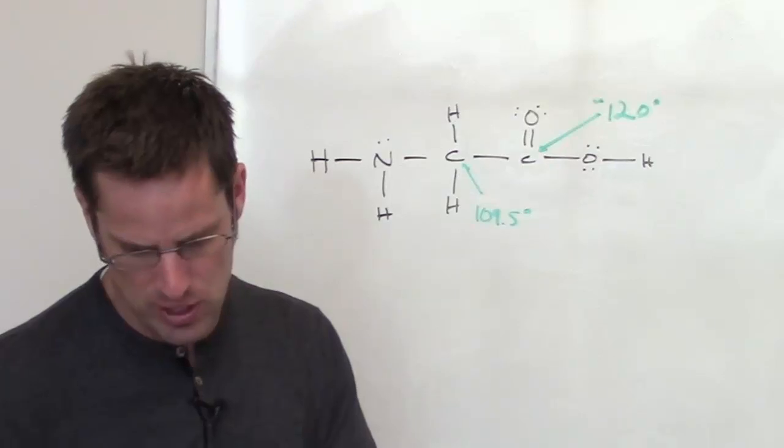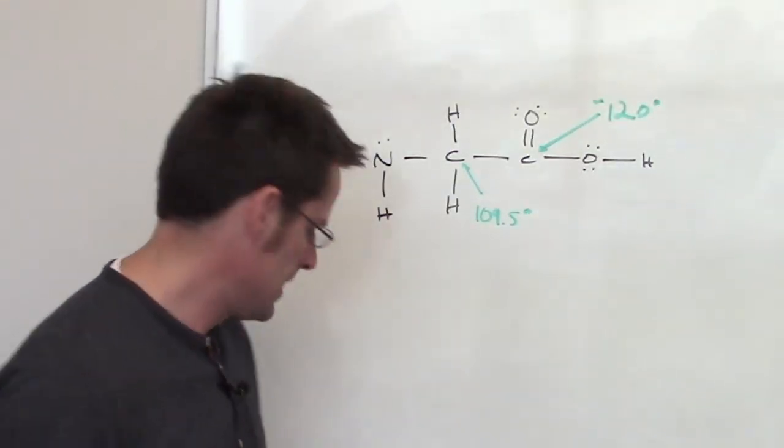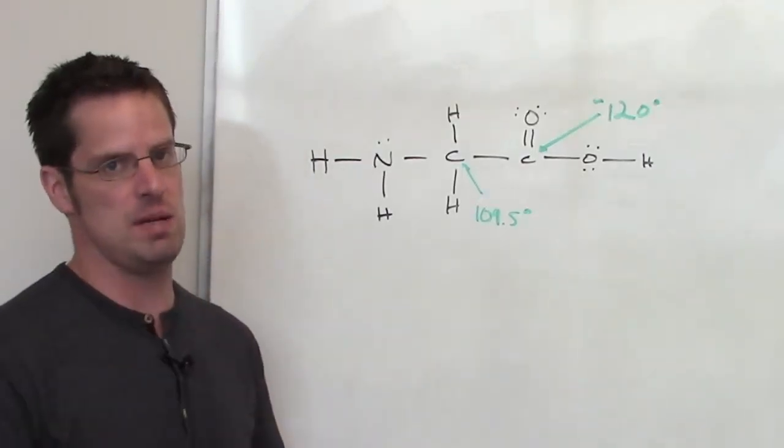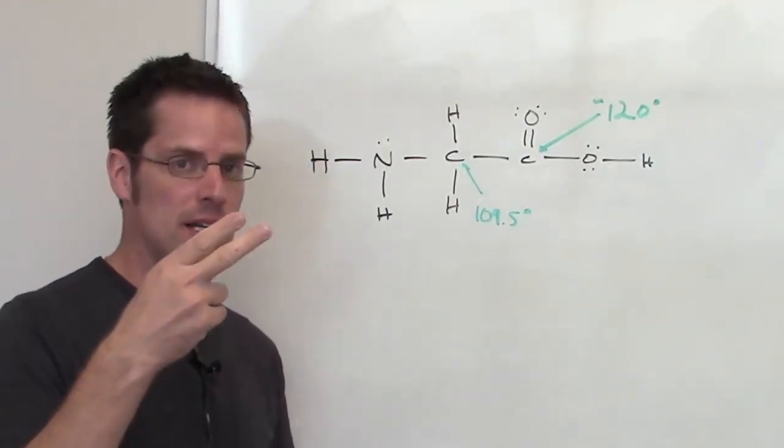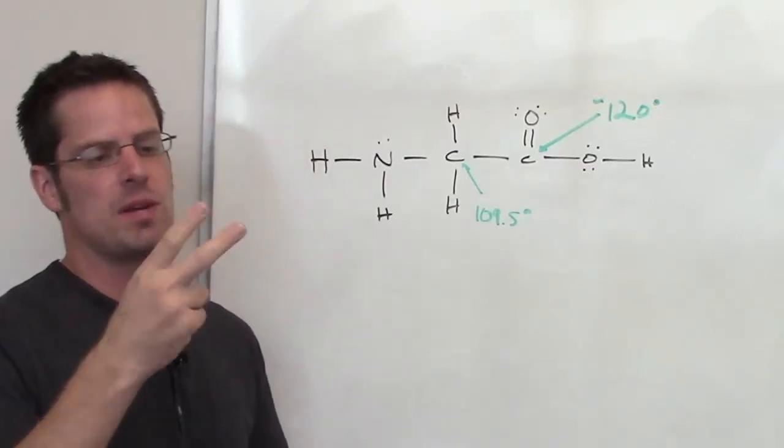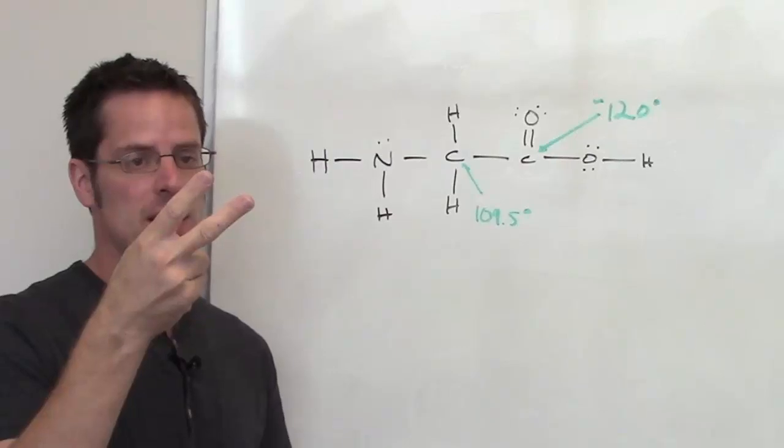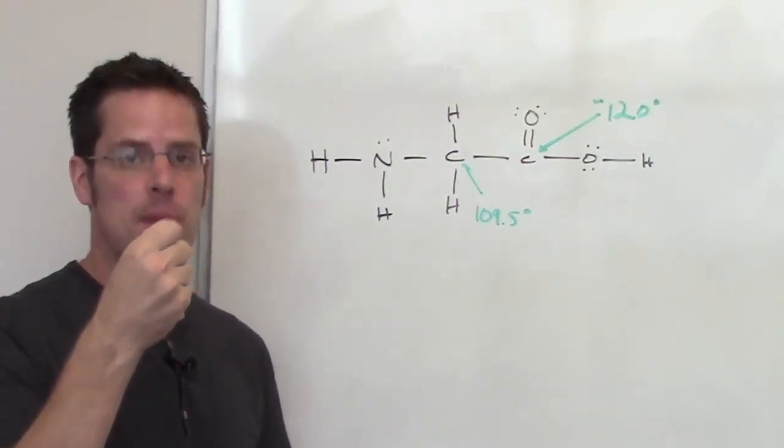The second question asks us how many total sigma bonds there are in glycine. Remember everywhere you see a single bond that is a sigma. Everywhere you see a double bond, one of those, every time you see a double bond it contains one sigma and one pi.